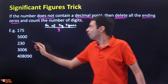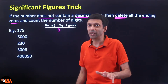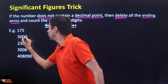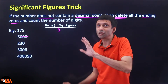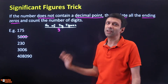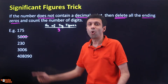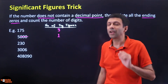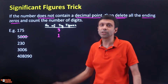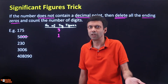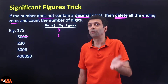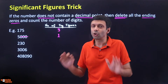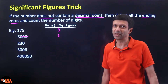Now let's look at 5000. No decimal point again, so delete all the trailing zeros. Strike out all those zeros. How many digits are left? Only one. That means the number of significant figures is just 1. Only 5 is significant. For example, if a distance was given as 5000 kilometers, you're not sure if it was 5007 or 5012 or even 5100 kilometers, so those ending zeros are not significant.